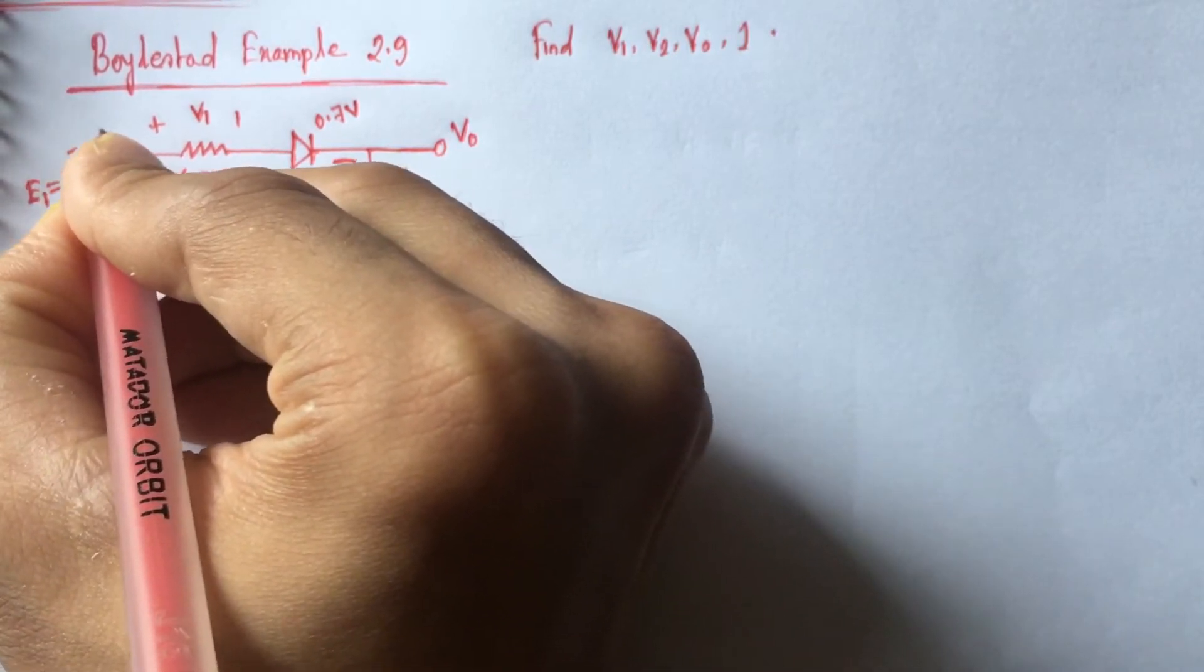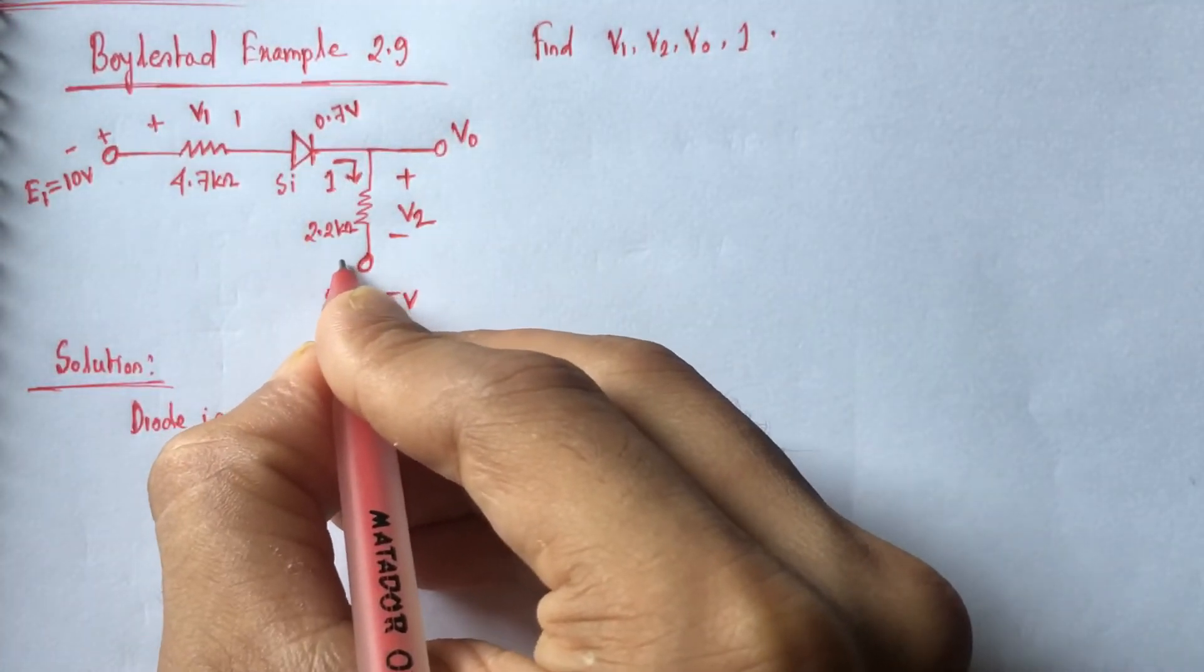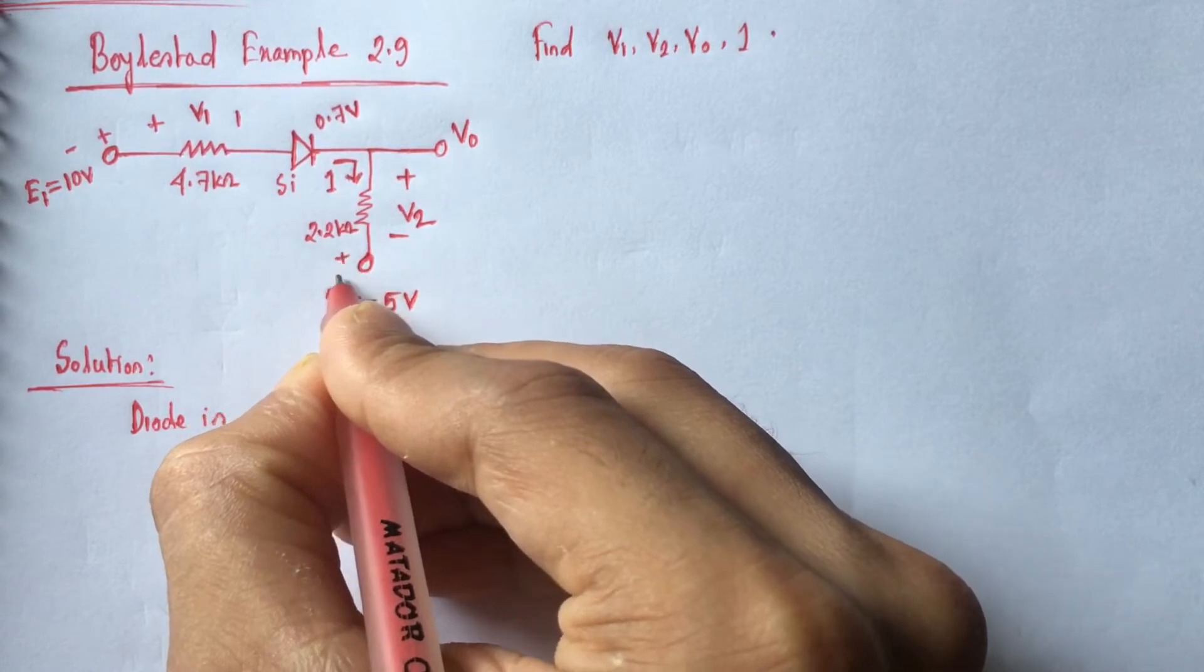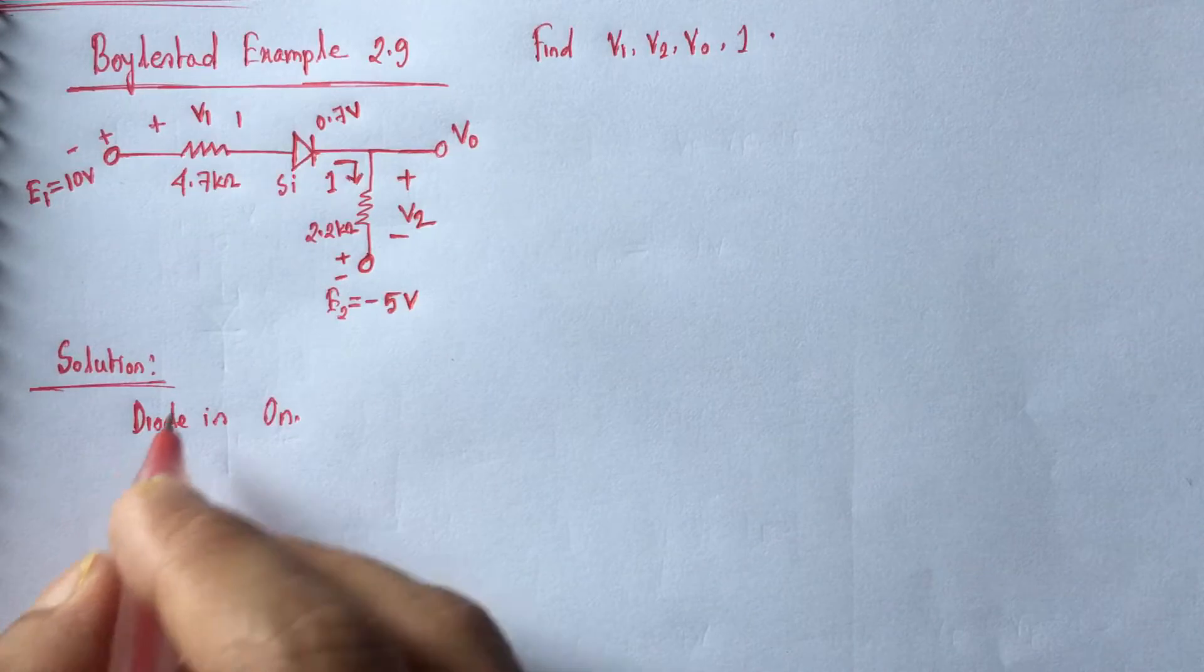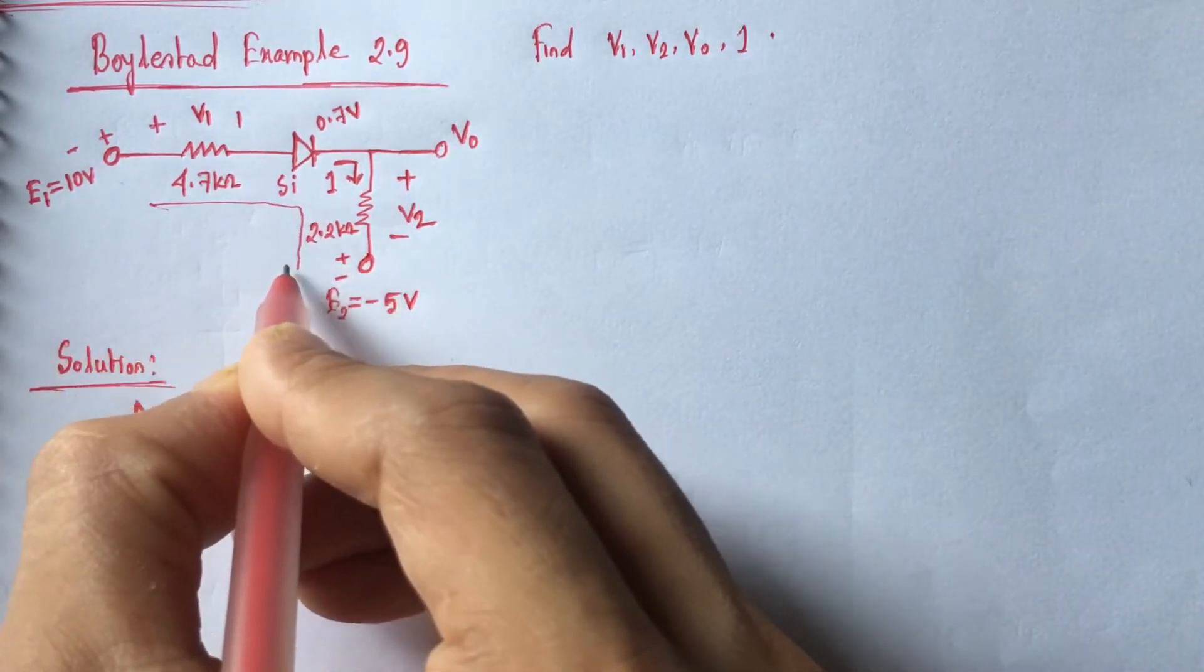Now we see that here the polarity of 10 volt is minus plus and the polarity is also plus minus. Now if we run the Kirchhoff's voltage law throughout the circuit,